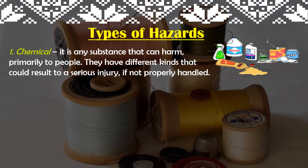That is the first type of hazard — chemical. Once we are exposed to chemical hazards, what will be the risk or effect? It can lead to lung diseases, or sometimes when we inhale chemicals, we have difficulty breathing. Another effect is allergies. That is the first type of hazard.